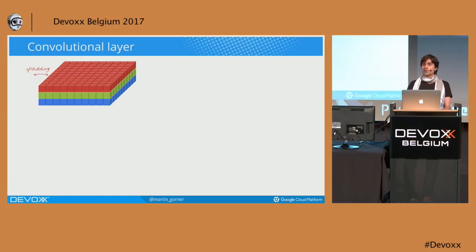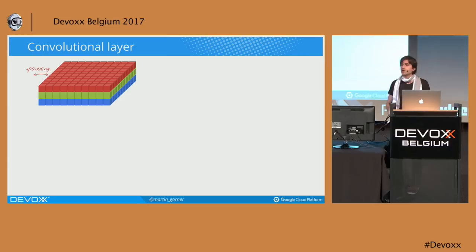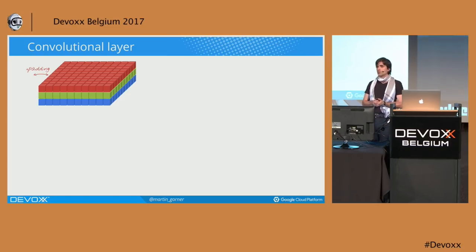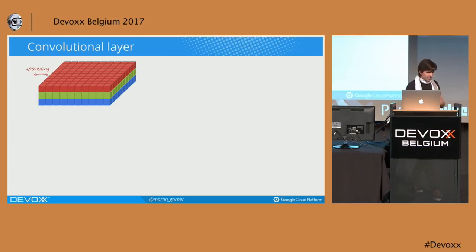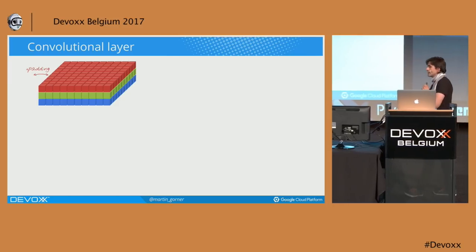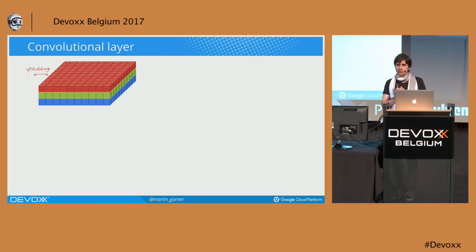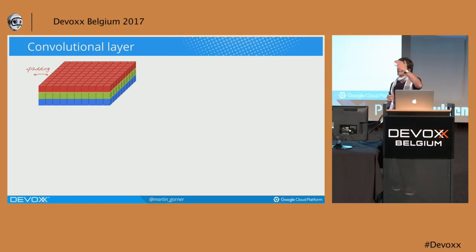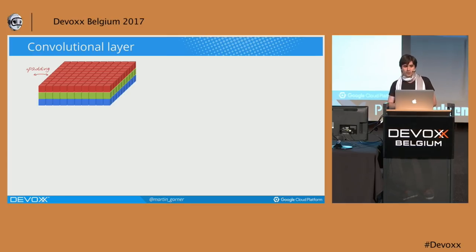The first thing I need to do is tell you something about convolutional neural networks. My little handbook tells me: for a vision problem you will not get anywhere without convolutional neural networks. What we've seen so far are dense neural networks where everything is connected to everything. What is a convolutional one?